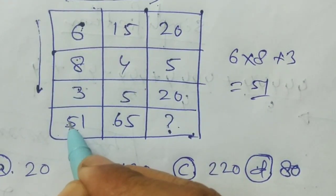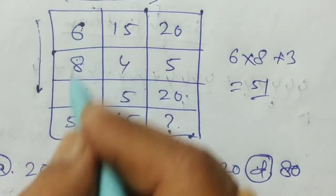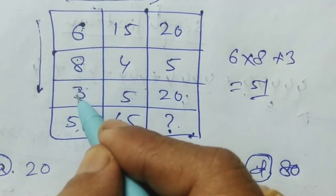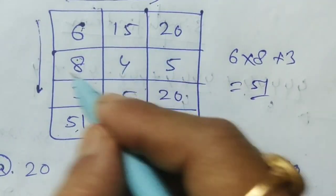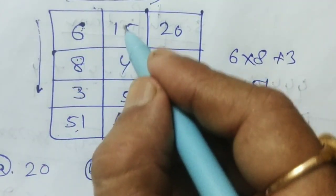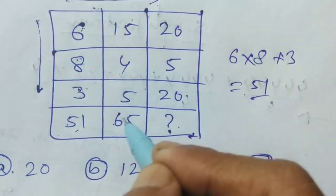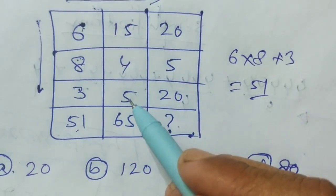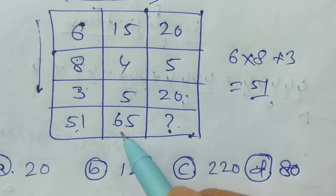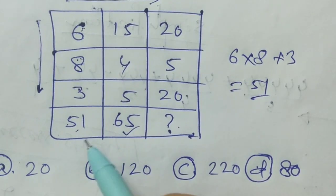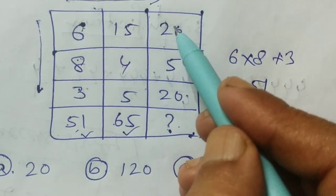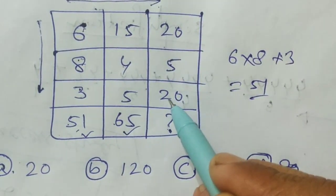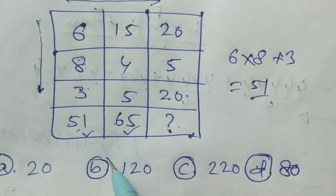Now apply this condition to the other columns. Whether it satisfies: 15 into 4 is 60 plus 5 equals 65 — so it is 65 here. And 20 into 5 is 100 plus 20 equals 120. So the answer is 120.